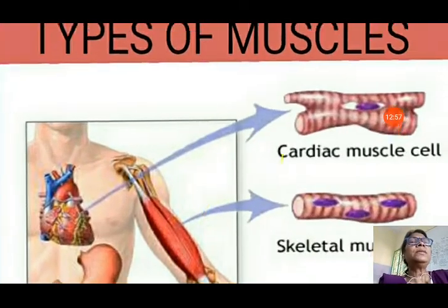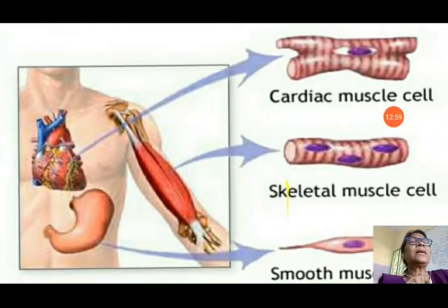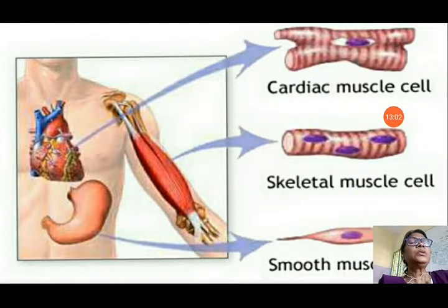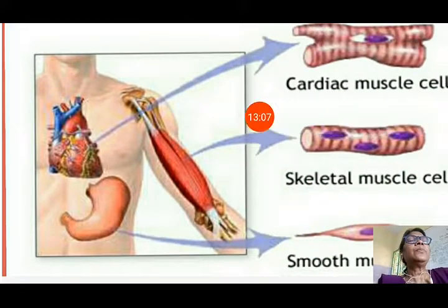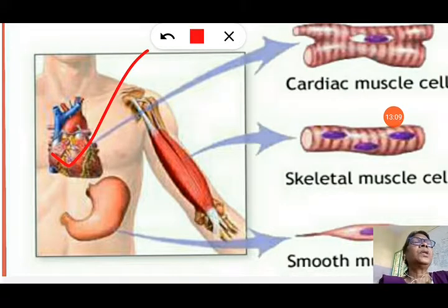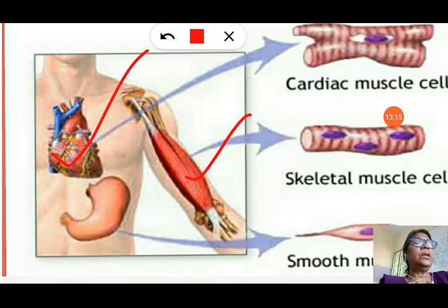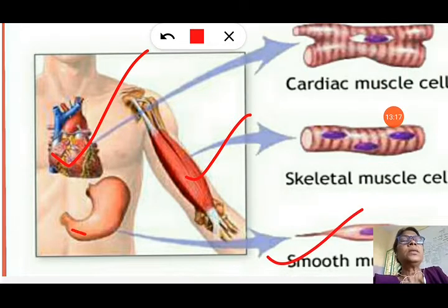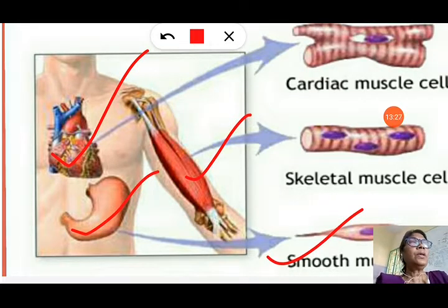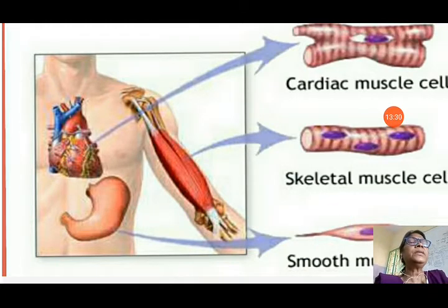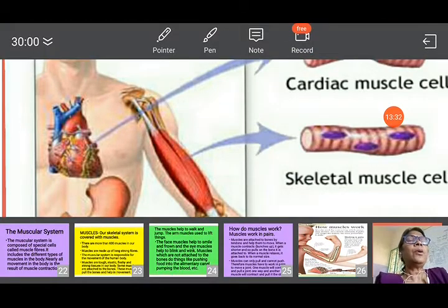Now, the types of muscles. There are three types of muscles: cardiac muscle, skeletal muscles, and smooth muscles. Cardiac muscles are present in our heart only. Skeletal muscles are also known as voluntary muscles because they work at our will. Smooth muscles are involuntary muscles — they are not attached to the bone and work without our will, meaning they are not under our control.